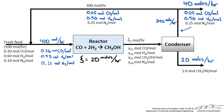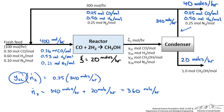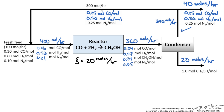Doing a balance around the condenser for carbon monoxide: Y2C × N2 = 0.25 × 340 mol/hr. An overall condenser balance gives N2 = 340 + 20 = 360 moles per hour. Balancing each component gives us the composition leaving the reactor. Now we have all compositions and molar flow rates.